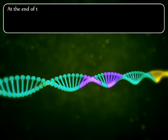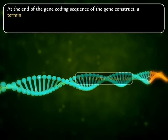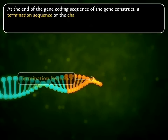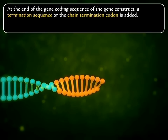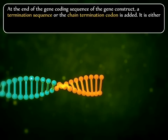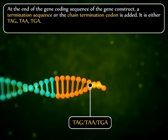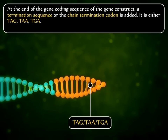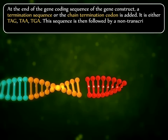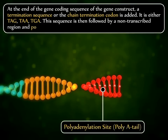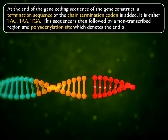At the end of the gene coding sequence of the gene construct, a termination sequence or chain termination codon is added. It is either TAG, TAA or TGA. This sequence is then followed by a non-transcribed region and polyadenylation site, which denotes the end of transcription.